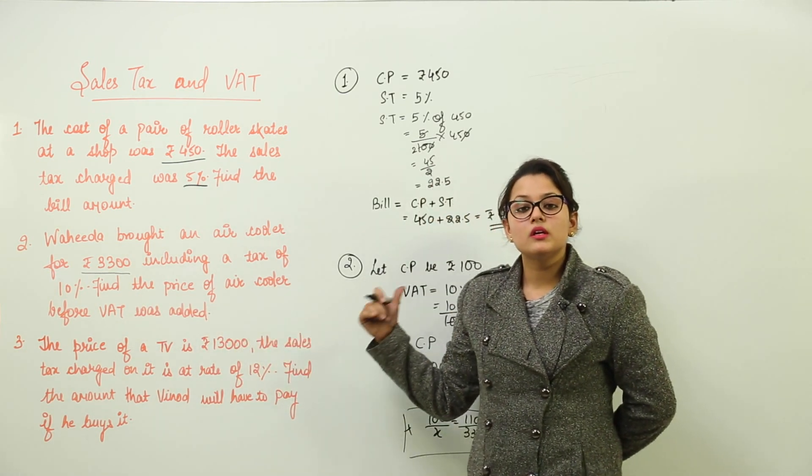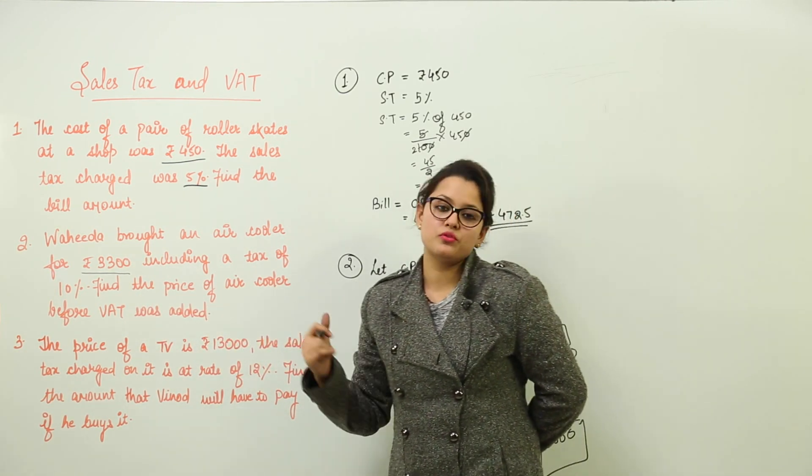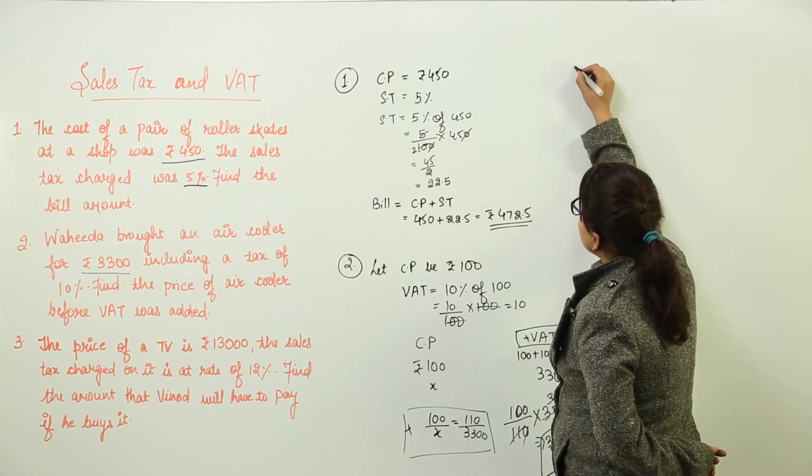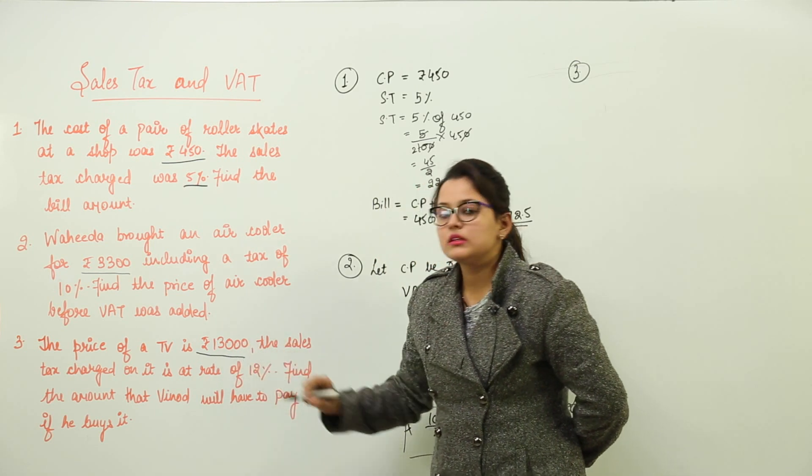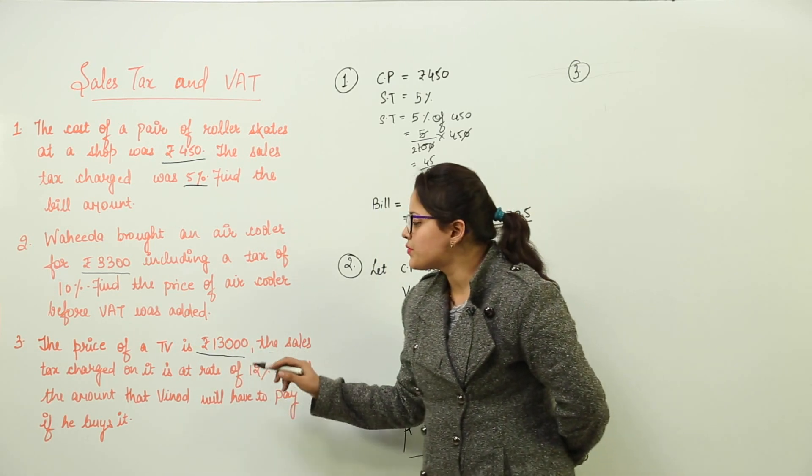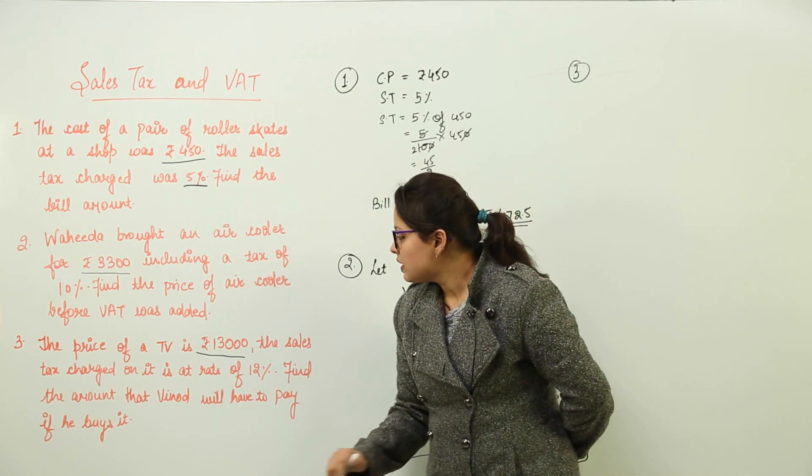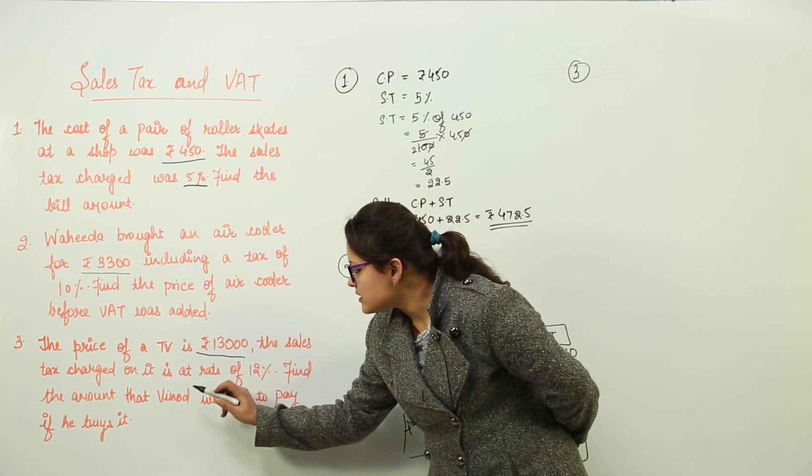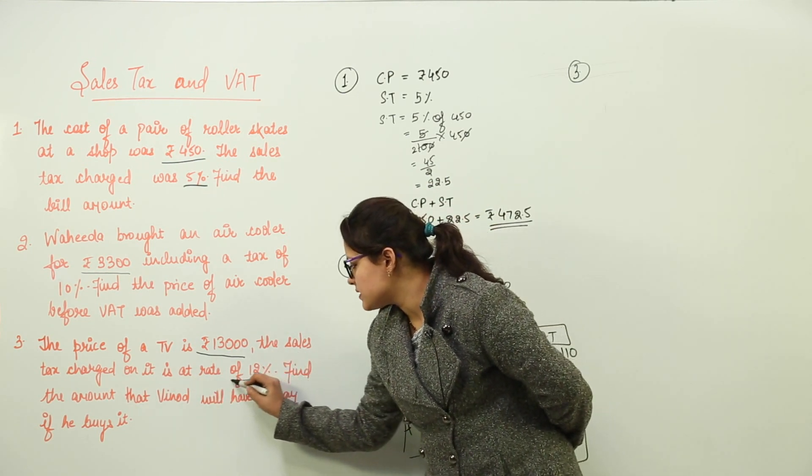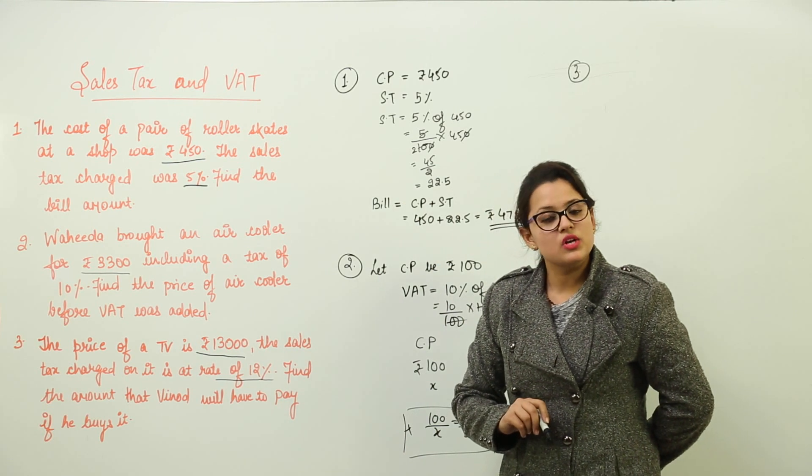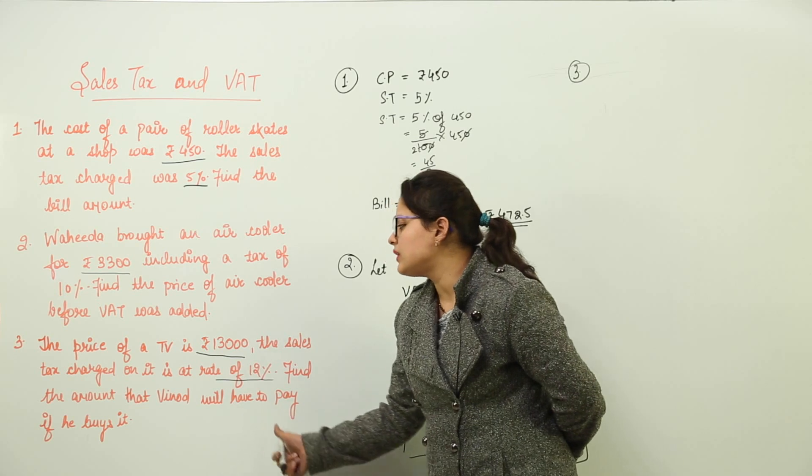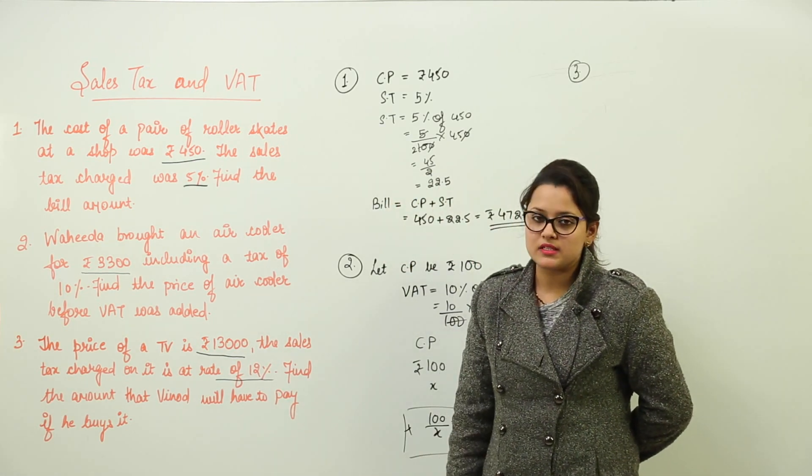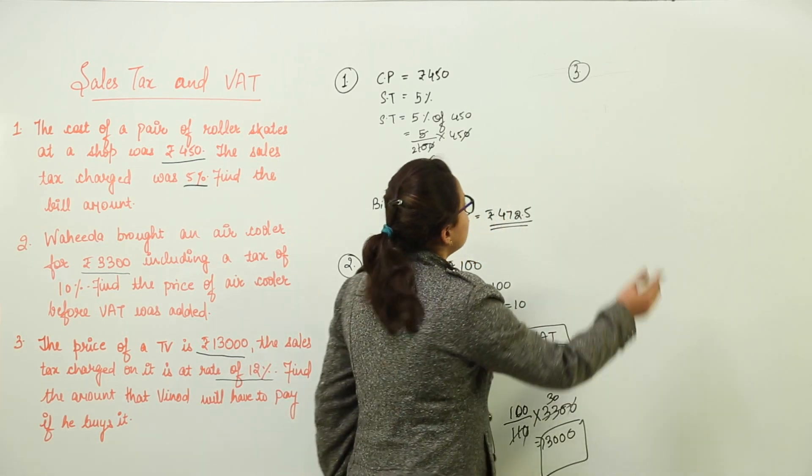That means if Vahida bought the air cooler for ₹3,300 at 10% tax, the original amount would have been ₹3,000. Now the next question, the third question, says the price of a TV is ₹13,000. Now ₹13,000 is the cost price, right? The sales tax charged is at the rate of 12%. We have to find the amount that Vinod will have to pay if he buys it.